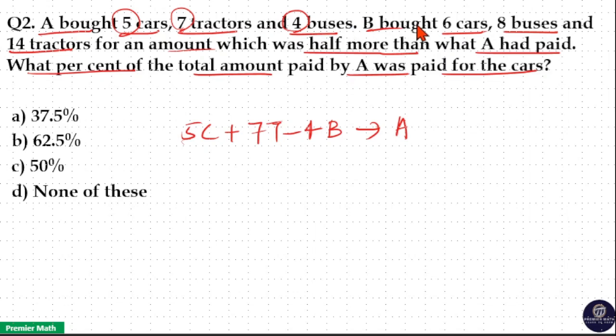Now B bought 6 cars, 8 buses, and 14 tractors. B paid half more than the amount A had paid.